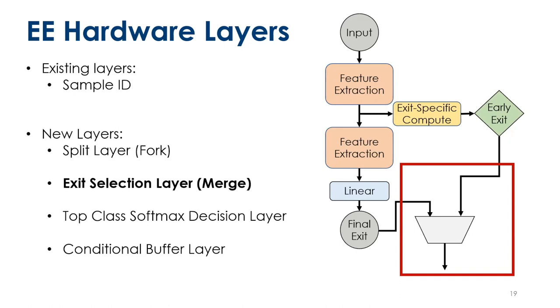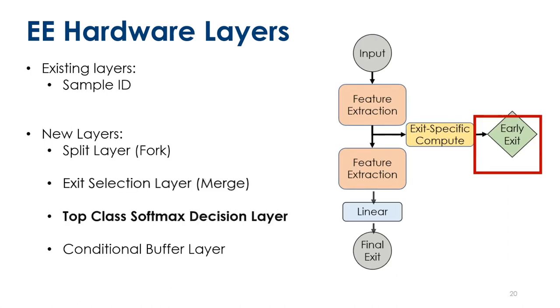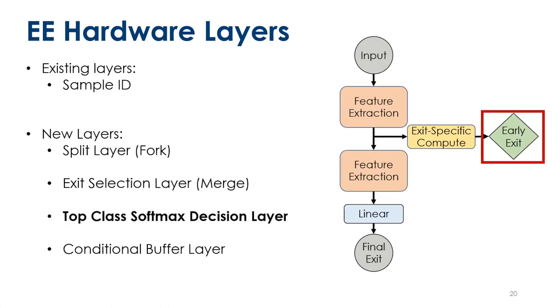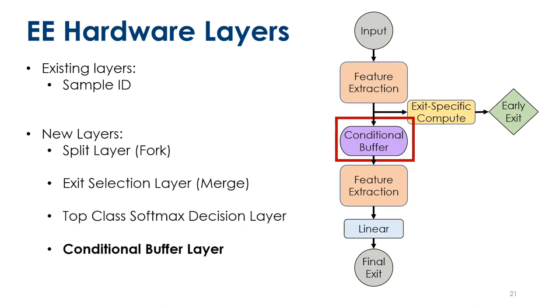I'm going to leave this off the diagram because it just adds additional complexity, but know that it is there making sure that the streams make their way off-chip. Then we've got the exit decision layer responsible for determining if the network is confident enough about a particular result to exit or not.